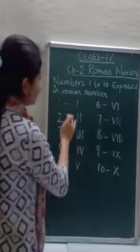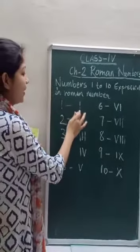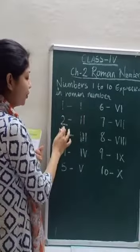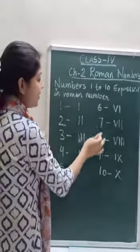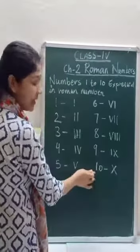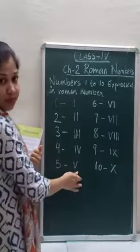So this is how we denote in Roman Numbers: 1, 2, 3, 4, 5, 6, 7, 8, 9, 10. This is how we denote it.